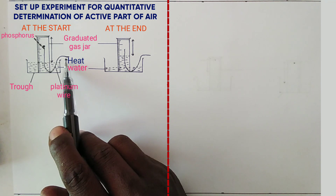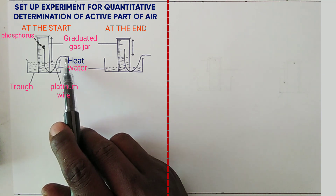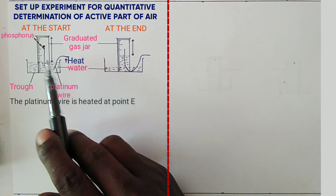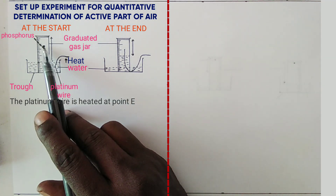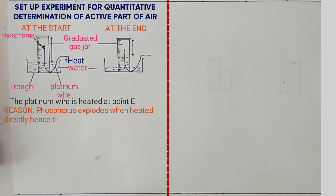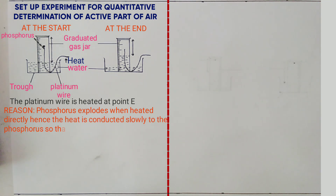The platinum wire is heated. The reason the platinum wire is heated instead of heating the phosphorus directly is because phosphorus explodes when heated directly. The heat is conducted slowly through the platinum wire to the phosphorus so that it gradually combines with oxygen.